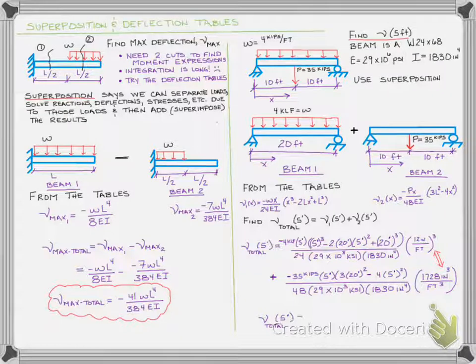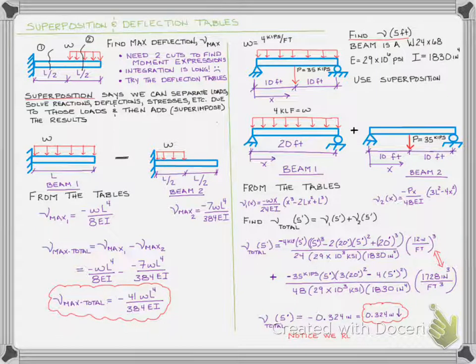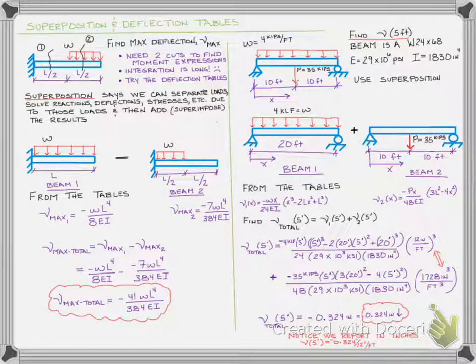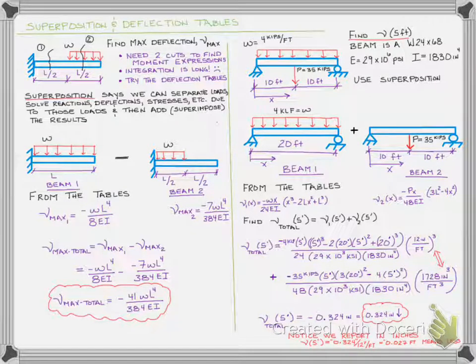And finally, our answer turns out to simply be negative 0.324 inches, or we can rewrite that as 0.324 inches going downwards. The final thing I want to leave you with is please always report this in inches. Because if you try to report this in feet, the equivalent would be 0.027 feet, and that's really hard to visualize. A third of an inch is easier to visualize. It's the same thing in metric units - 3 millimeters is easier to envision than 0.003 meters. All right, I hope this helped you out. Have a great day.